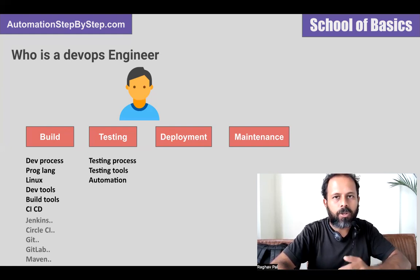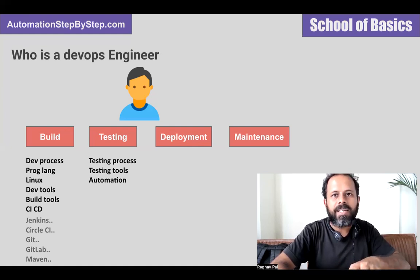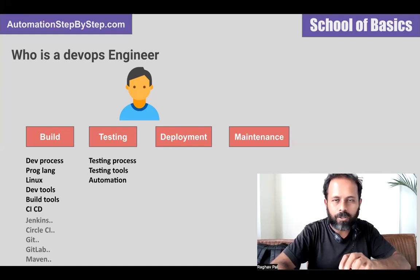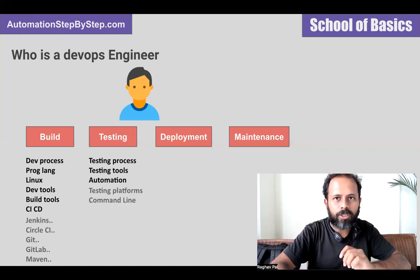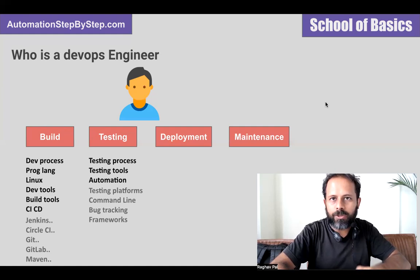Coming to the testing phase, the DevOps person will have knowledge about the testing process: what platforms and tools are being used. If test cases are being scripted in a particular platform or tool, he will understand that. In case any automation projects, frameworks, or tools are being used, he will have knowledge of that, including command line executions, bug tracking tools or platforms, and any frameworks being used. He will have knowledge of all the testing platforms and processes.